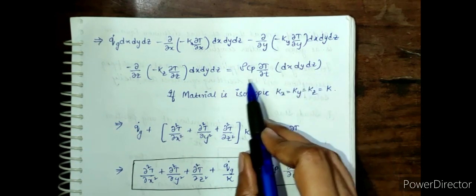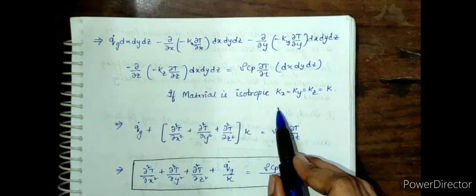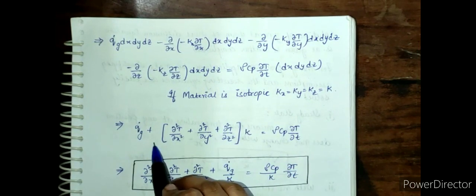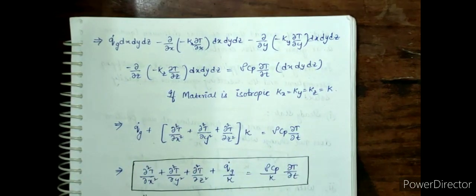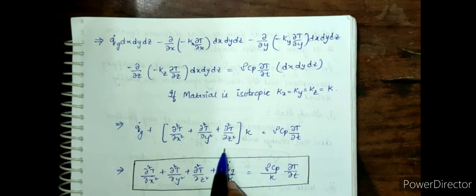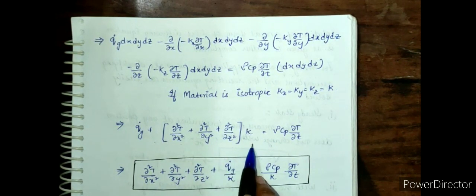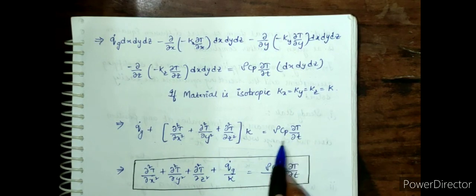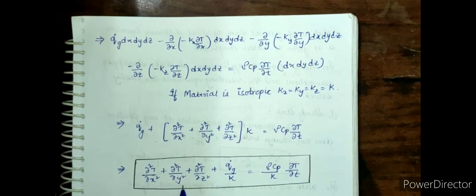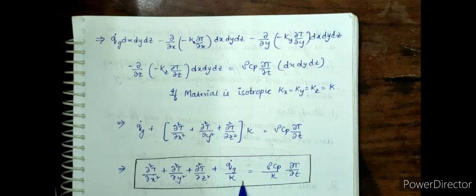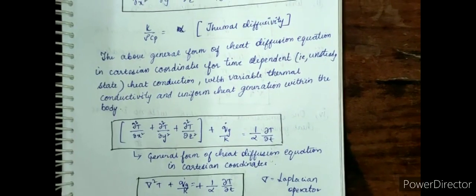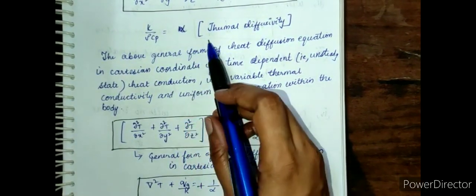If the material is isotropic, thermal conductivity is the same in all directions, so kx = ky = kz = k. The equation then becomes: qg + k·(∂²T/∂x² + ∂²T/∂y² + ∂²T/∂z²) = ρ·cp·(∂T/∂t). Rearranging: ∂²T/∂x² + ∂²T/∂y² + ∂²T/∂z² + qg/k = (ρ·cp/k)·(∂T/∂t), where k/(ρ·cp) is called thermal diffusivity, denoted by alpha (α).